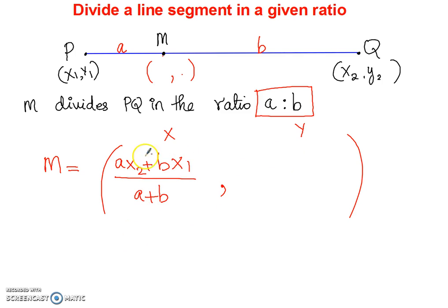And the Y is given by the same ratio. The only change is instead of X, you are going to put Y there. So A Y2 plus B Y1. We are only picking Y here because this is the Y coordinate. Divided by A plus B.